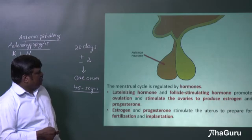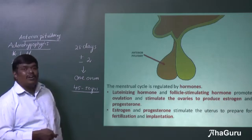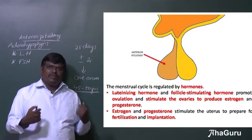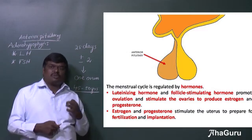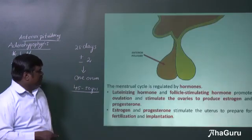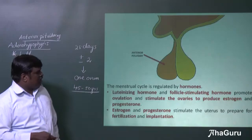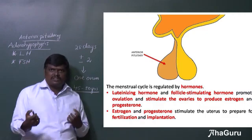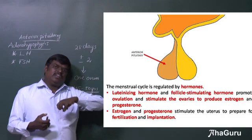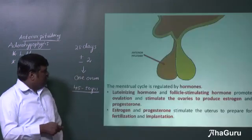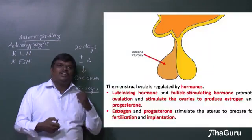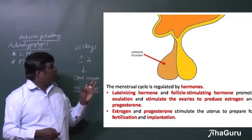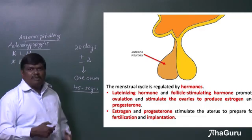These hormones also stimulate the ovary to produce estrogen and progesterone, which help maintain pregnancy. Estrogen and progesterone stimulate the uterus to prepare for fertilization and implantation — meaning once fertilization occurs, the resulting zygote needs to get implanted in the uterus. So basically, four hormones are involved: luteinizing hormone, follicular stimulating hormone, estrogen, and progesterone.